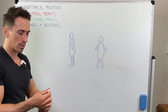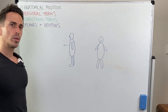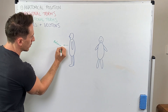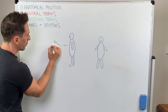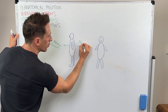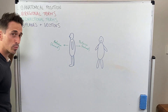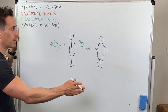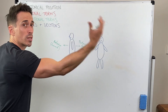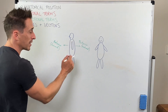First, facing forward — the term we're going to use is anterior. Anterior means towards the front, and posterior means towards the back. If something is anterior to something else, it's closer towards the front. If something is more posterior, it's closer towards the back. Think of your bum being your posterior — towards the back.